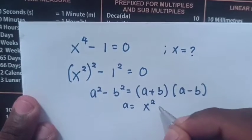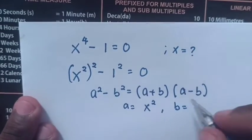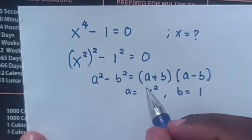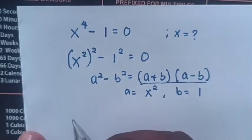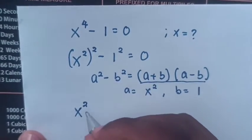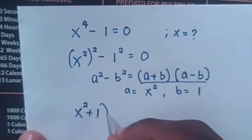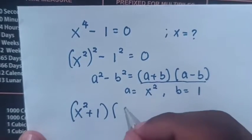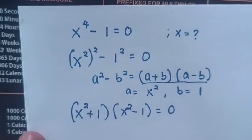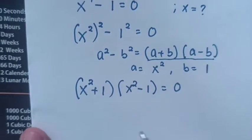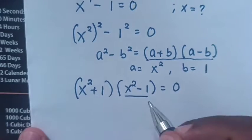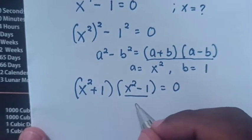Here, a equals x² and b equals 1. Applying the rule, the equation becomes (x² + 1)(x² - 1) = 0.